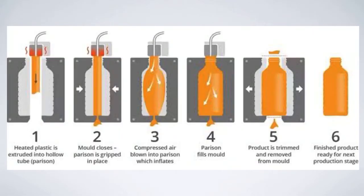Sequence میں دیکھیں: سب سے پہلے heated plastic کو extruded into hollow tube کیا جاتا ہے جسے parison کہتے ہیں۔ پھر mold close ہوتا ہے اور parison is gripped in place۔ اس کے بعد تیسرے step میں air blow ہوتی ہے۔